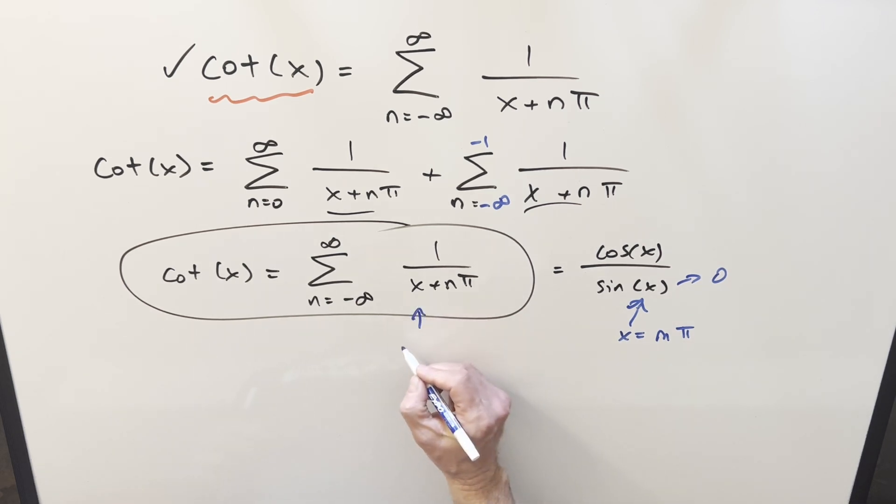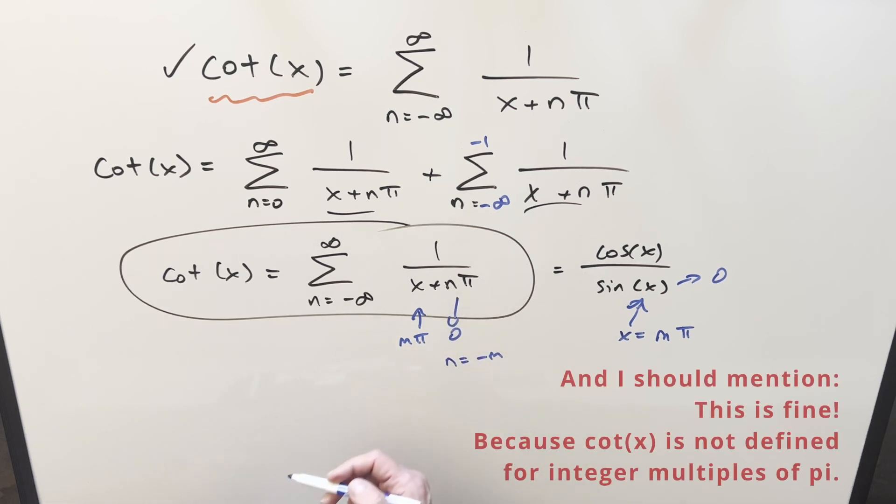Well, what you see if you plug in m pi for x, where the problem is, is when n is equal to minus m, then you're dividing by zero here. And this thing blows up. But otherwise, you put it in a spreadsheet and you get something approximately close to the value you should get for cotangent x.